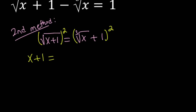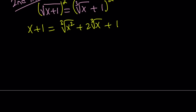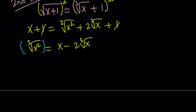We have x plus 1 on the left. On the right-hand side, we have a plus b quantity squared, so it's going to look like cube root of x squared plus 2 times cube root of x plus 1. This is not good because we still have cube roots. Even if we isolate cube root of x squared and write it as x minus 2 times the cube root of x, then cube both sides — that's just going to introduce more radicals. So this is kind of not getting anywhere.